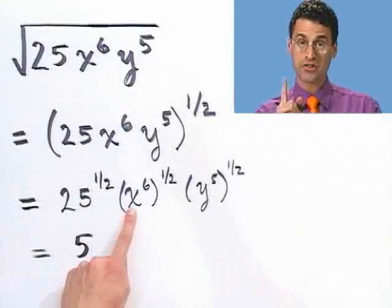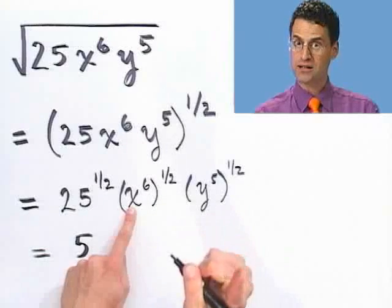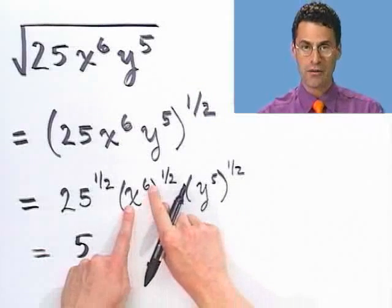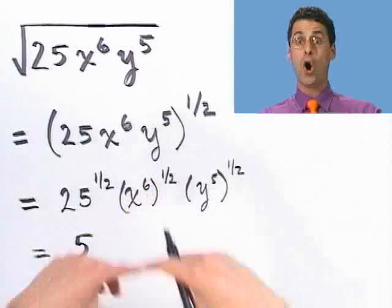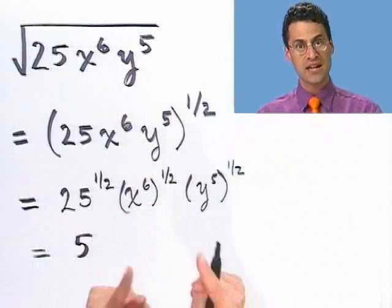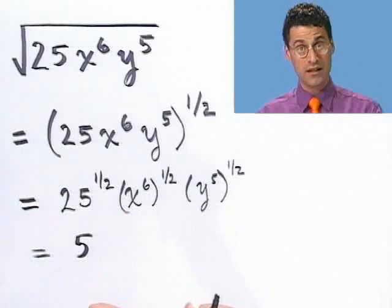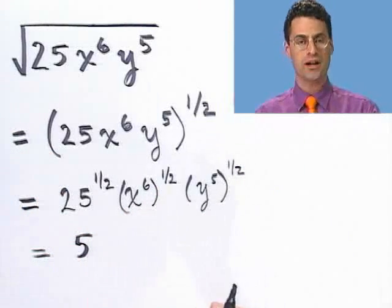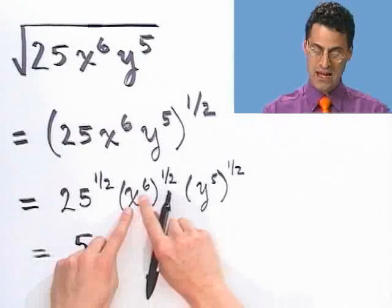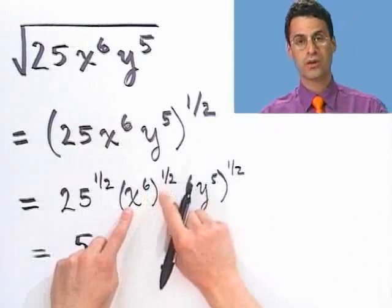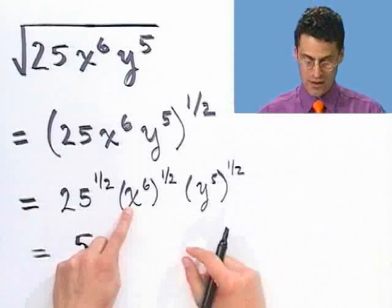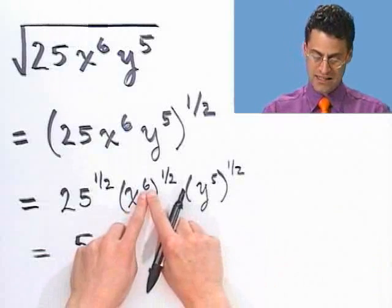Here we can simplify using another rule of exponents: if you have something to a power and raise the whole thing to another power, you multiply the exponents. If you're not sure, try a cubed squared — you'll get a to the sixth.